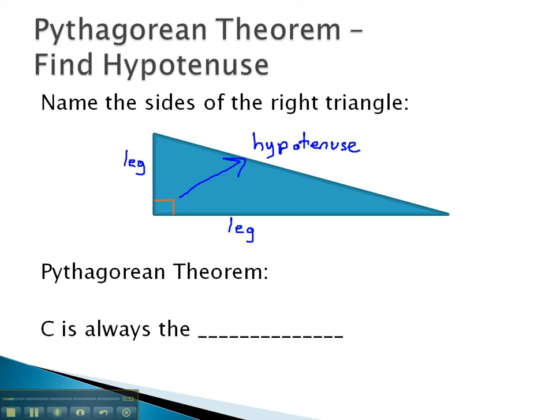We have a relationship from geometry that connects the two legs and the hypotenuse together. The Pythagorean Theorem is the name of this formula, and it is a squared plus b squared equals c squared, where a, b, and c are the three sides of the triangle.